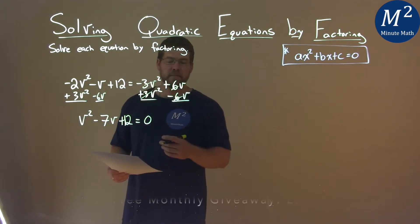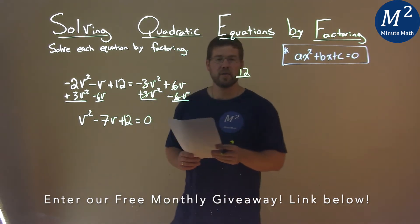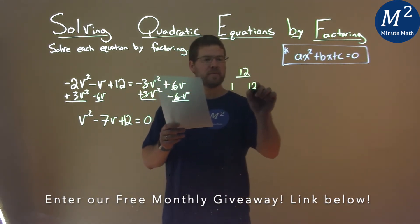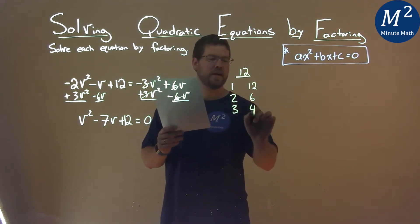Well, we got to factor. So look at my c value, which is 12. What two numbers multiply to be 12? Well, that's 1 and 12, 2 and 6, and 3 and 4.